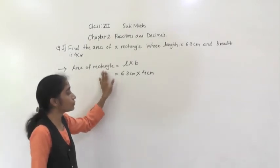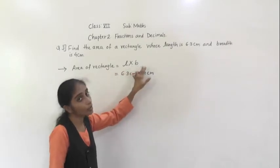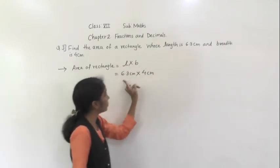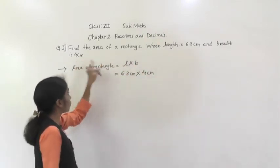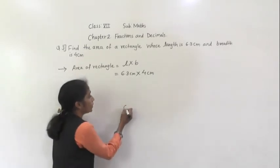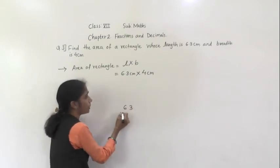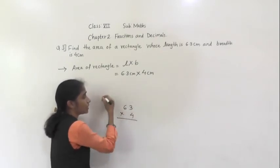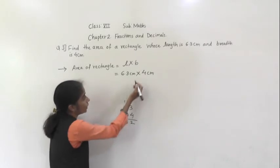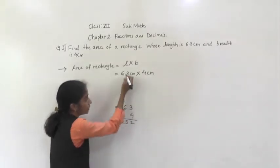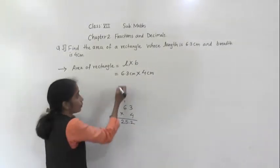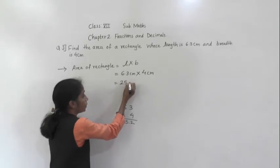Length is given 6.3 cm. Breadth is given 4 cm. So we have to do the multiplication of both numbers. 6 times 4: 6 fours are 24, carry 1 — 25. Where is the decimal point? After decimal point here 1 digit. So count the number of digits — before 1 digit give the decimal point. So the answer is 25.2.